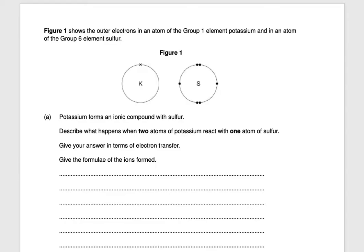Hi everyone and welcome to our video on some exam questions related to structure and bonding. Our first exam question states: Figure 1 shows the outer electrons in an atom of the group 1 element potassium and in an atom of the group 6 element sulfur. Potassium forms an ionic compound with sulfur. Describe what happens when two atoms of potassium react with one atom of sulfur, in terms of electron transfer, and give the formula of the ions involved.